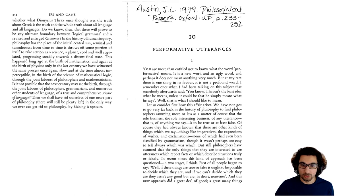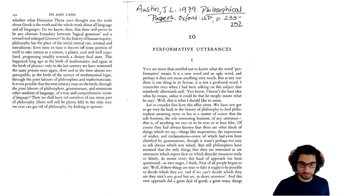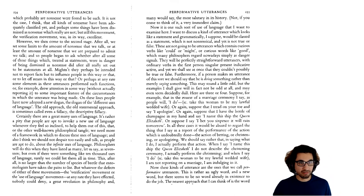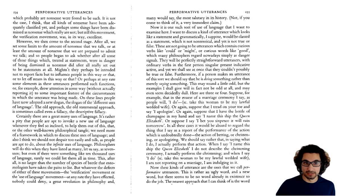Austin is referring here to the positivists who said that much of traditional philosophy — including metaphysics and perhaps even ethics — was in fact nonsense and should be ignored. 'And this new approach did a great deal of good. A great many things which probably are nonsense were found to be such. It is not the case that all kinds of nonsense have been adequately classified yet, and perhaps some things have been dismissed as nonsense which really are not. But still, this movement — the verification movement — was in its way excellent.'